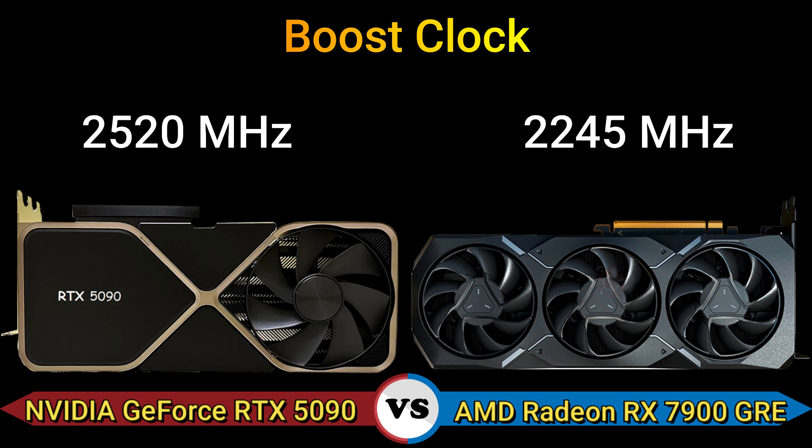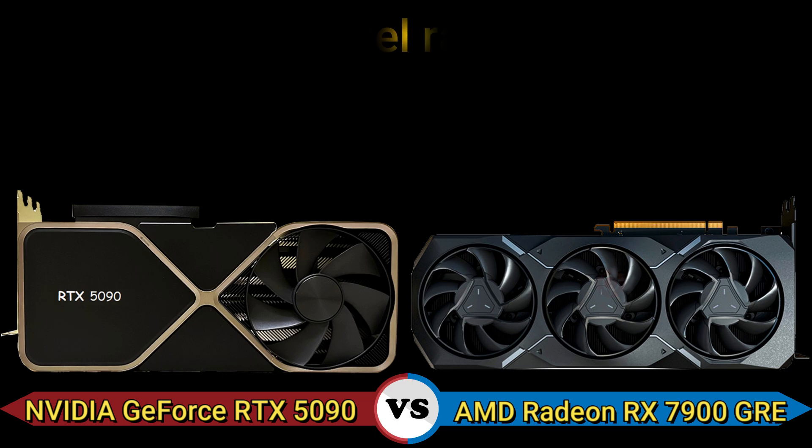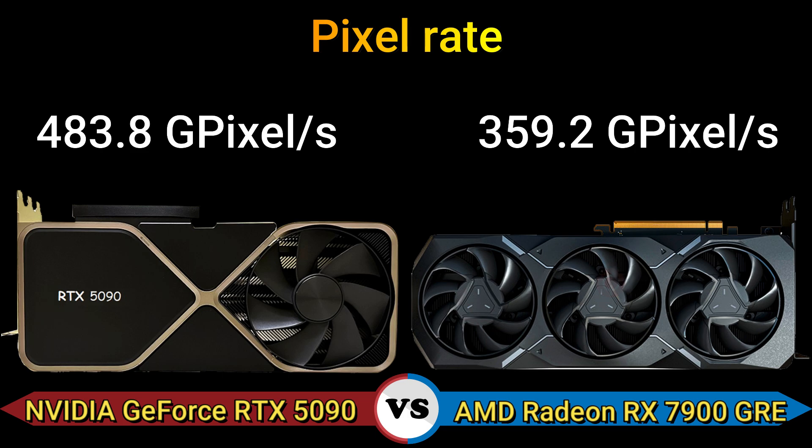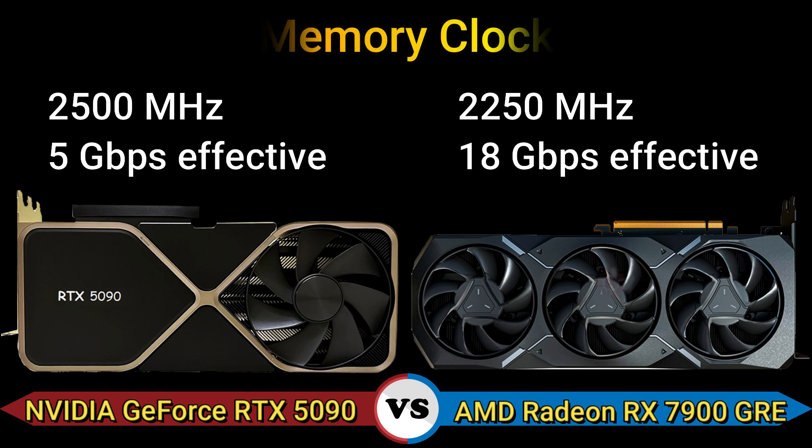Pixel rate: 483.8 gigapixels per second and 359.2 gigapixels per second. Memory clock: 2500 MHz, 5 Gbps effective, and 2250 MHz, 18 Gbps effective.